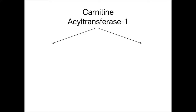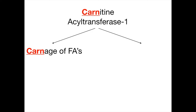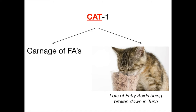Two mnemonics to remember CAT-1 as the rate-limiting enzyme: First, carnitine acyl transferase 1 is responsible for the 'carnage' — the destruction — of fatty acids; 'carn' in carnage matches 'carn' in carnitine. Second, think of a cat eating fatty acids broken down in tuna, since cats love tuna. These mnemonics will get you free points on test day.